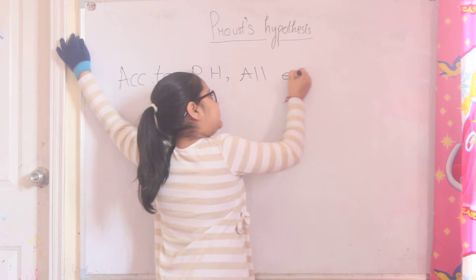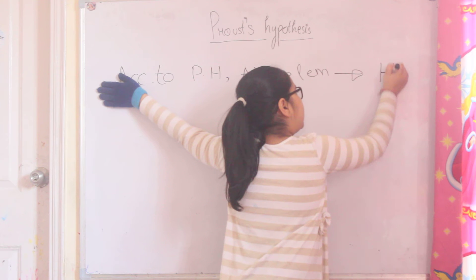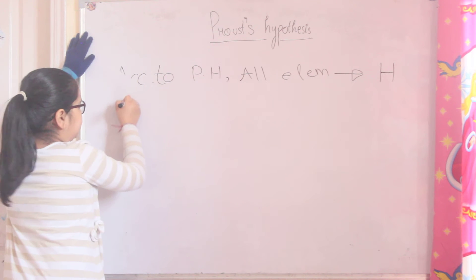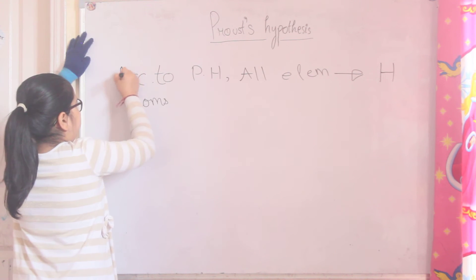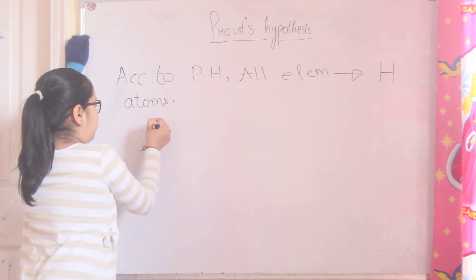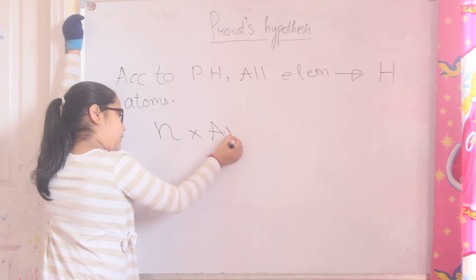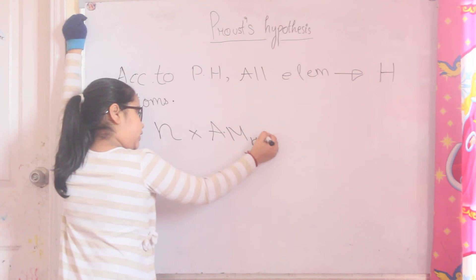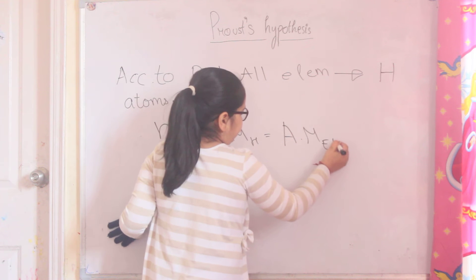All elements are made up of hydrogen atoms. So n into atomic mass of hydrogen is equal to atomic mass of elements.